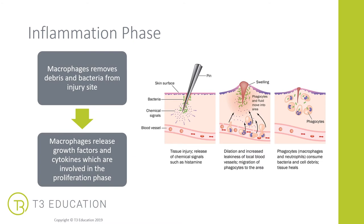Within the inflammation phase, we have macrophages — white blood cells — and they arrive in the area and mop up and remove any debris and bacteria from the injury site. Think of them like Pac-Man picking up all the bits along the way. They also release growth factors and cytokines, which are then involved in the proliferation phase. When there's less oxygen to the area, macrophages are stimulated to create a process to help increase local blood flow and circulation to the area.